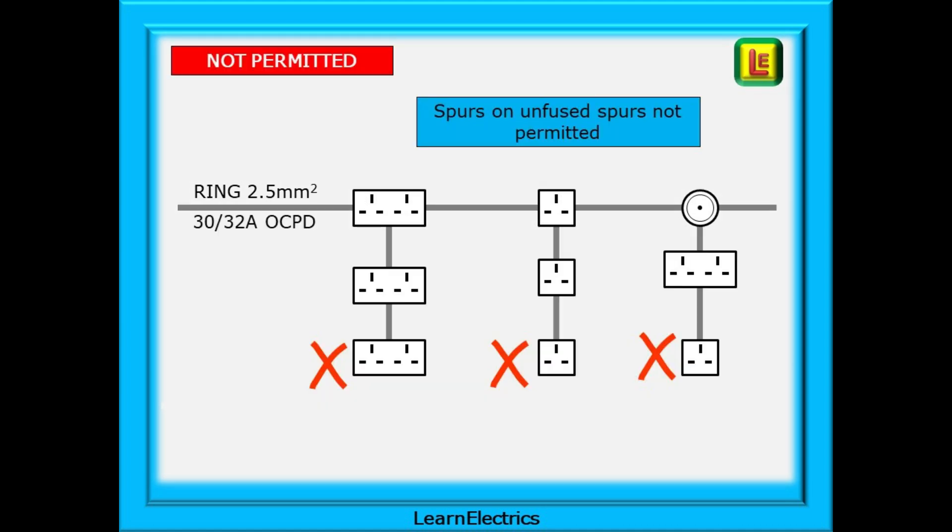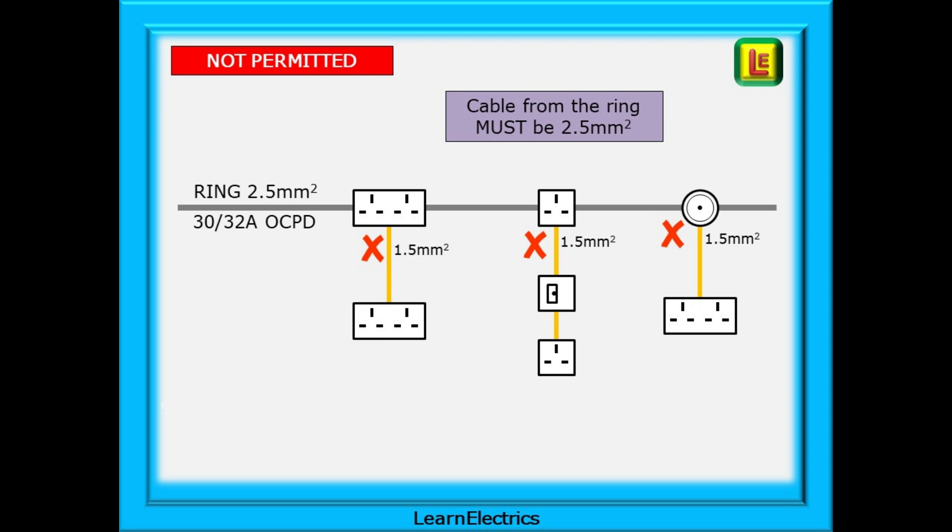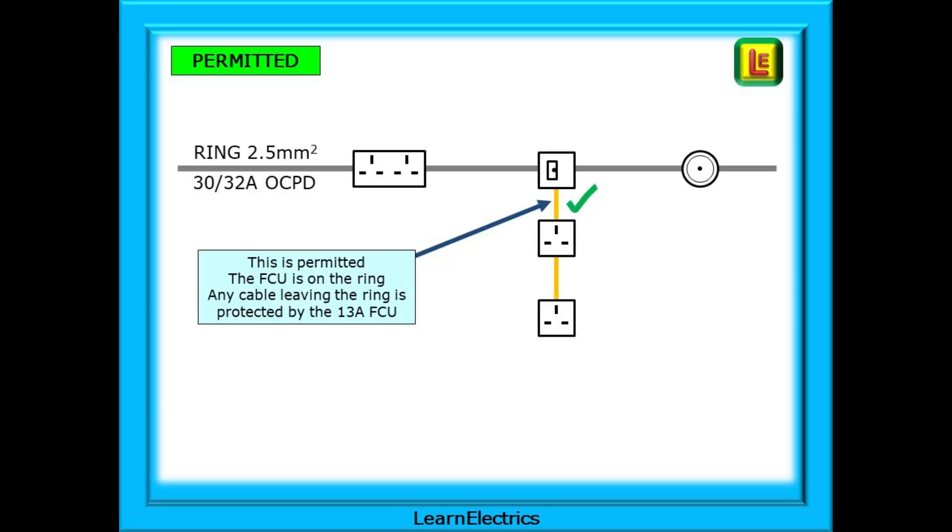So spurs on unfused spurs are just not permitted, and cables from the ring must be the same size as the ring conductors, in this case 2.5mm. Using smaller 1.5mm cable to come off the ring is not permitted in most cases. However, if there is a fused spur, in other words an FCU sitting on the ring, then we can come off the ring straight away with 1.5mm cable.